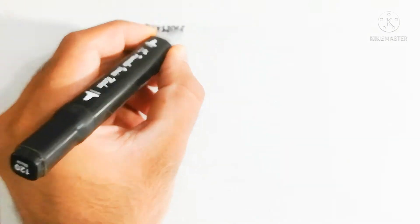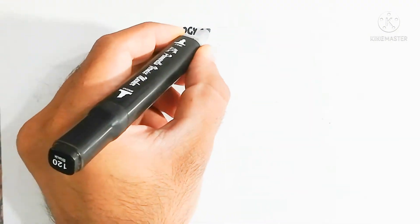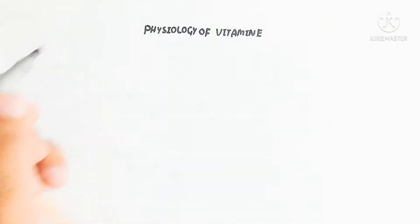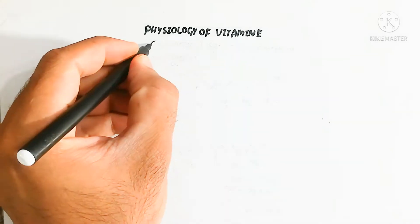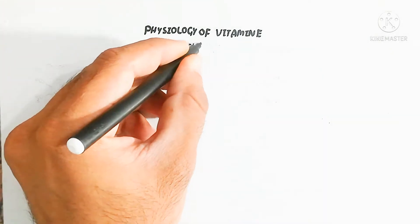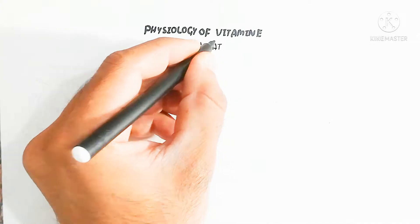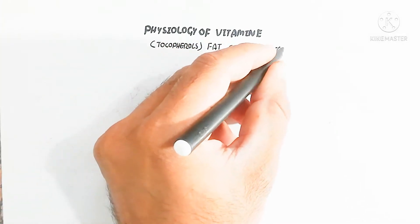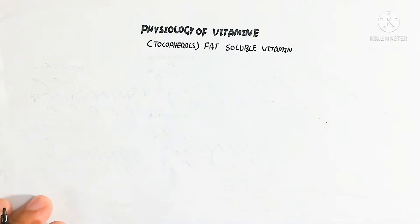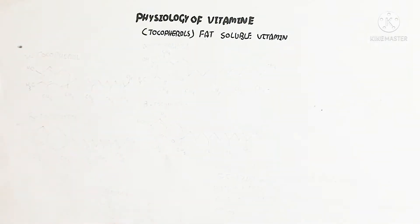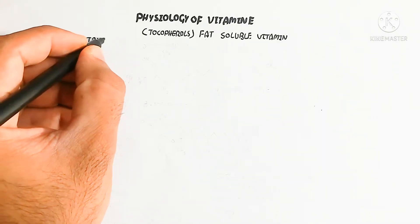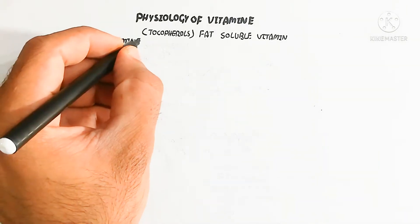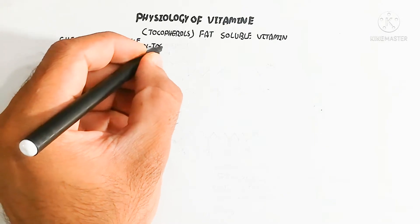In this video we will look at the physiology of vitamin E. Vitamin E is known as tocopherol and it is a fat-soluble vitamin, meaning it can be dissolved into fat. Let's begin to understand the chemistry of vitamin E.